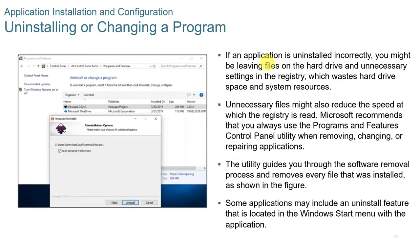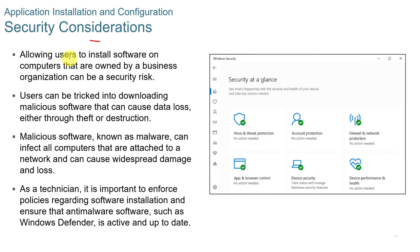When uninstalling, if an application is uninstalled incorrectly it may leave files on the hard drive and unnecessary registry settings, wasting space and system resources. Always use the proper uninstall process. From a security standpoint, allowing users to install software on business-owned computers can be a security risk — users can be tricked into downloading malicious software. As a technician, it's important to enforce software installation policies and ensure anti-malware software such as Windows Defender is active and up-to-date.